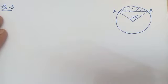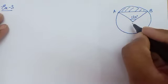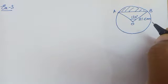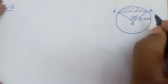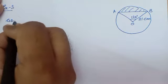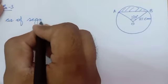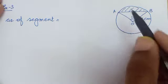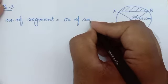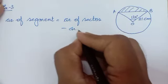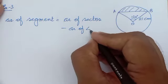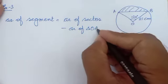How to find the area of segment? Basic method: area of segment is area of sector minus area of triangle OAB. So area of triangle OAB — is triangle ka area kaise nikalen? Ismein perpendicular drop karo.